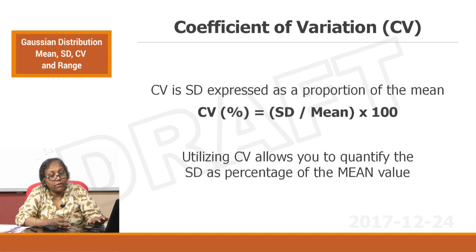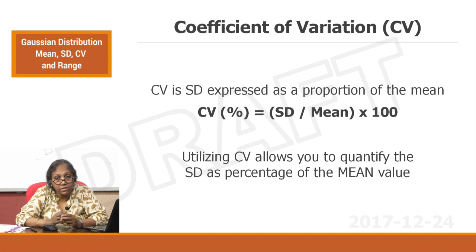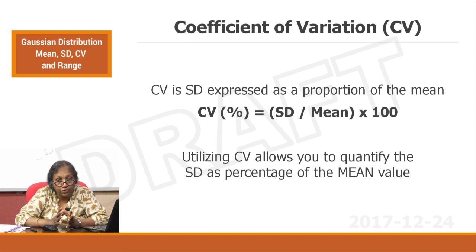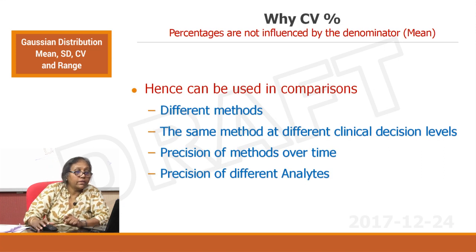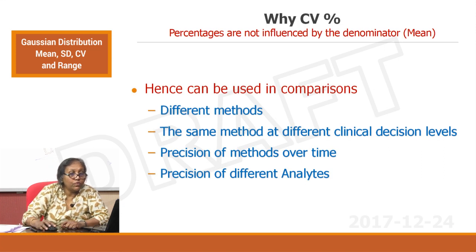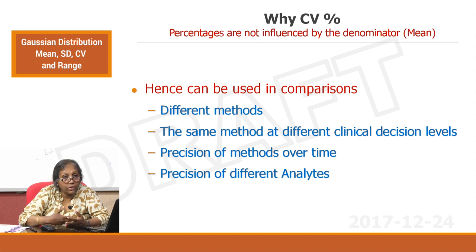CV% is a great equalizer and is always used for comparison to understand how the performance of a machine or analytical system is. CV can be used for comparisons of different methods, the same method at different clinical decision levels — yes, you have Level 1 QC, Level 2, Level 3 QC — and you can analyze performance at different decision levels.